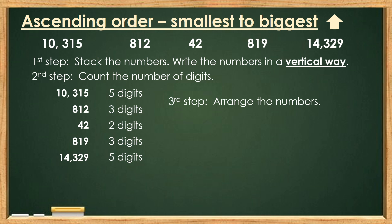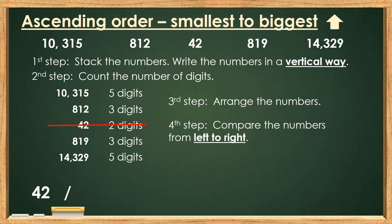We can see that number 42 only has 2 digits, so it should be the smallest number. We can see that there are 2 numbers with 3 digits, so we will need to add one more step. Step number 4: Compare the numbers from left to right. Let's look at the 2 numbers: 812 and 819. Let's start to compare the numbers from left to right.